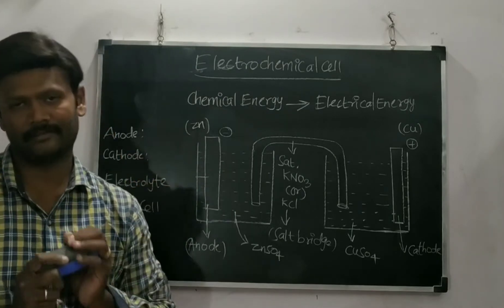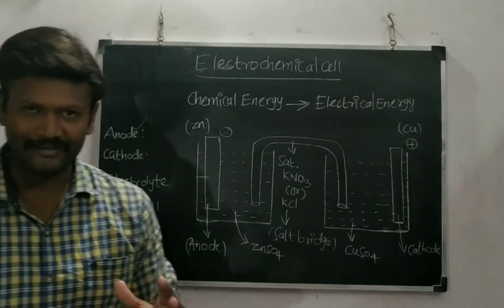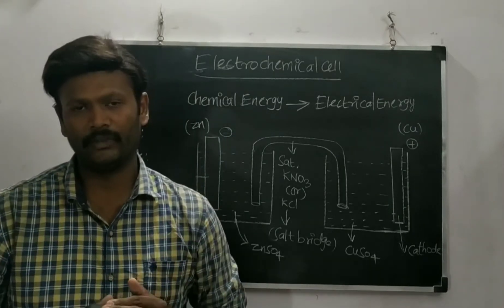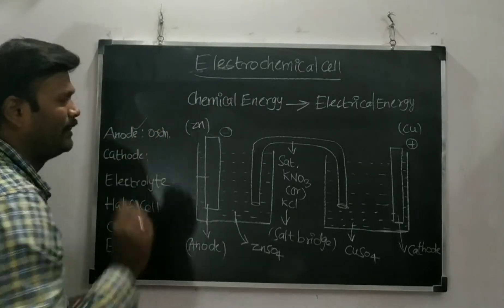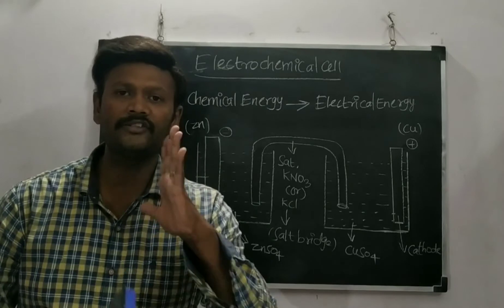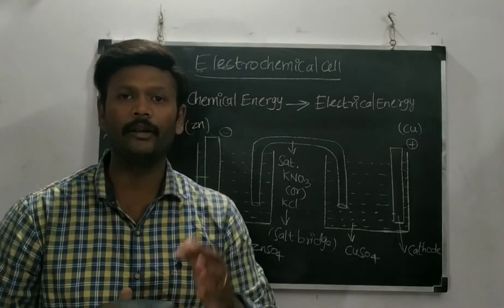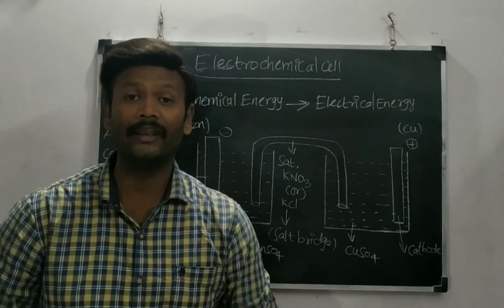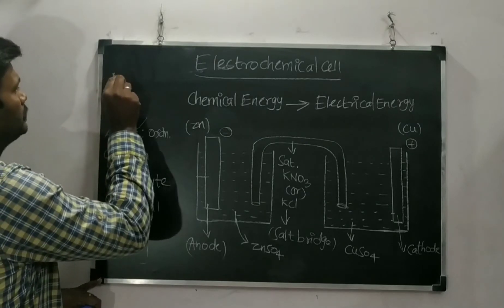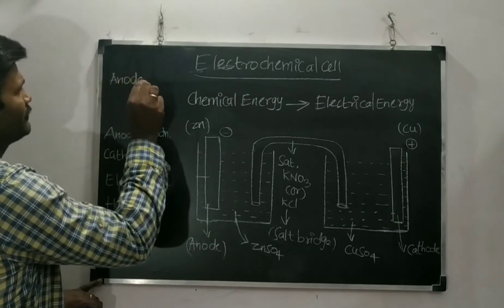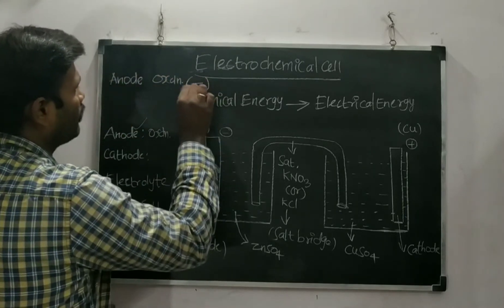Before going into the topic, we must understand some fundamental things. What is an anode? Anode is a kind of electrode at which the oxidation reaction takes place. Oxidation is nothing but the loss of electrons. So at the anode, oxidation reaction takes place — there will be a loss of electrons.